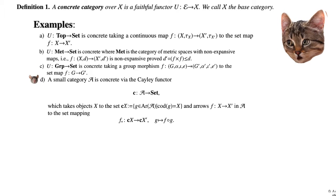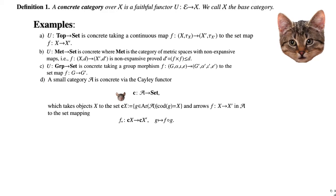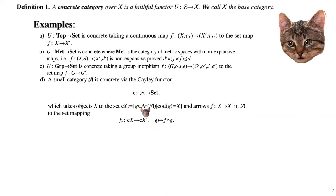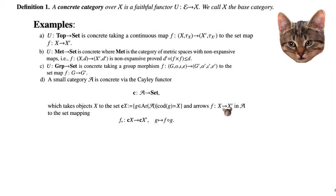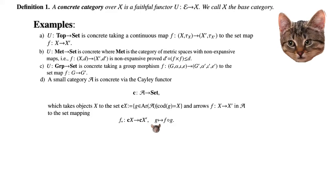We also have that every small category A is concrete via the Cayley functor C: A → Set, which takes objects in A to the set C(X) given by all arrows in A whose codomain is X. It takes an arrow F: X → X' in A to a set mapping F_* : C(X) → C(X'), which is just post-composition — it takes an arrow G with codomain X and post-composes F onto it.